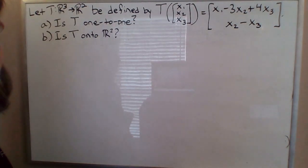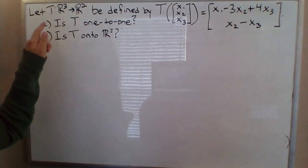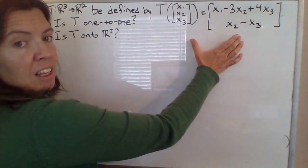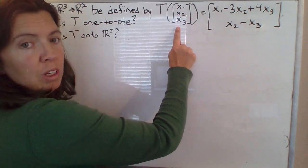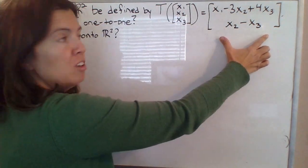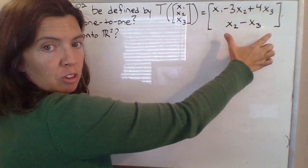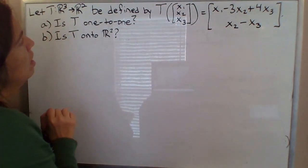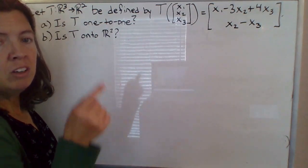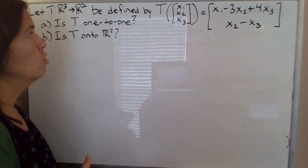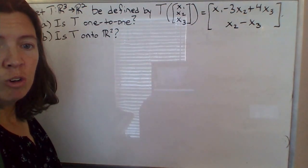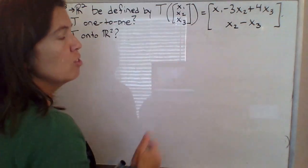Here's an example of a linear transformation from R3 to R2. This transformation is defined by this equation. Notice the input is a vector in R3 — x1, x2, x3 — and the output is a two-dimensional vector in R2. We want to determine whether this transformation is one-to-one and whether it's onto R2. In answering each of these questions, it's going to be easier if we find the standard matrix for this transformation.